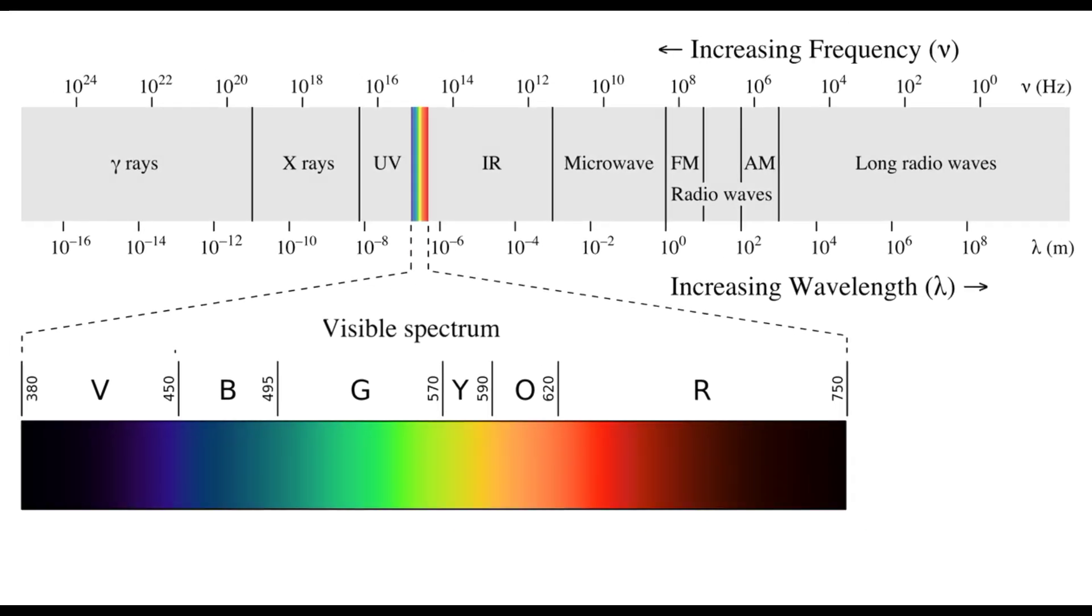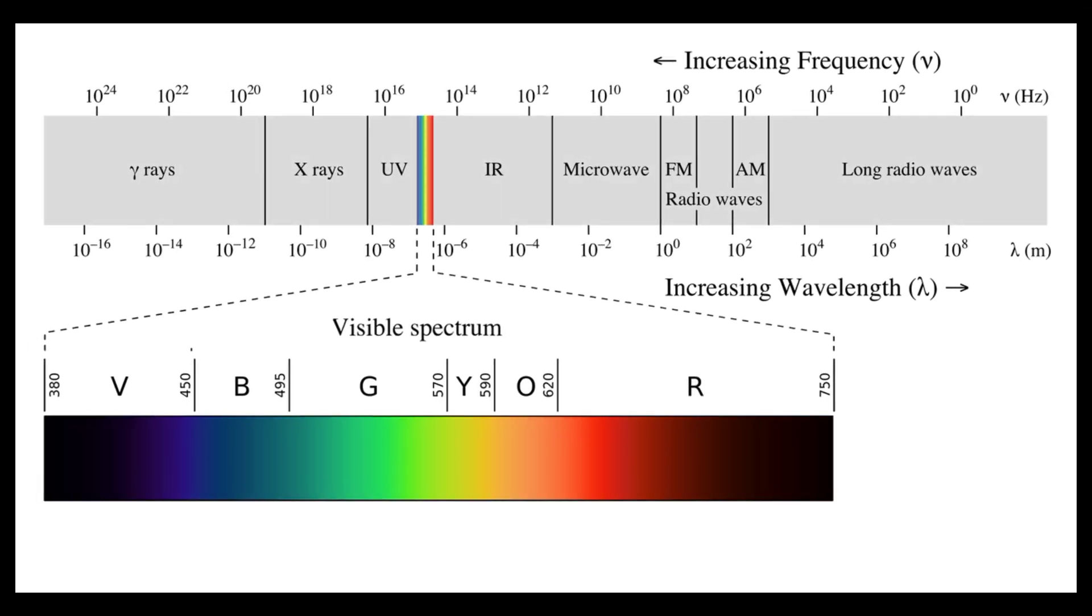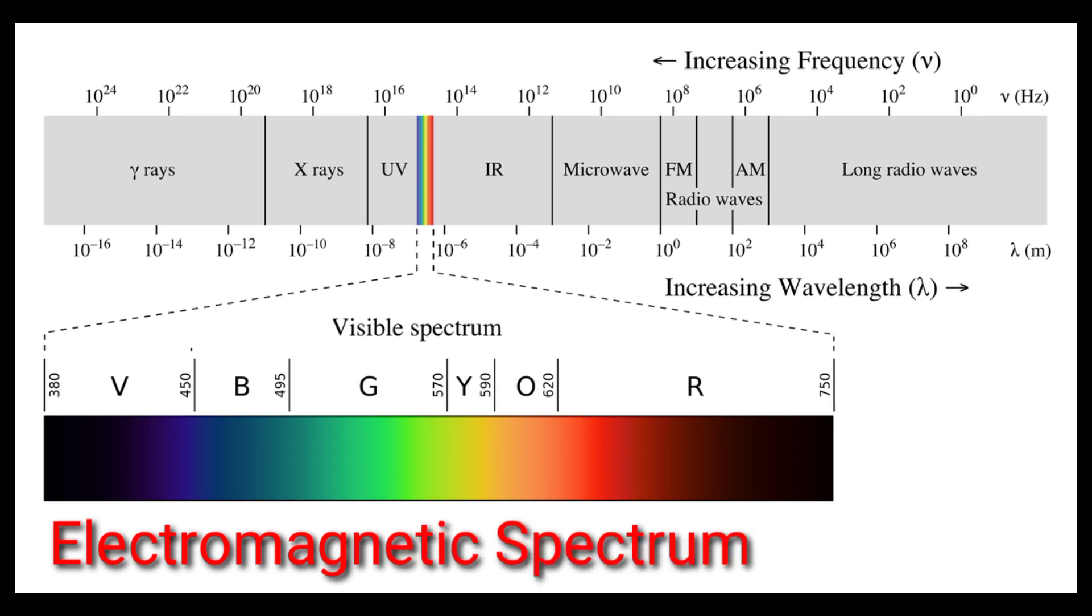Electromagnetic waves can have a wide variety of wavelengths. The entire range of wavelengths is known as the electromagnetic spectrum. The electromagnetic spectrum consists of a continuous range of wavelengths from gamma rays at the shorter wavelength to radio waves at the longer wavelength. But our eyes are sensitive only to visible light.